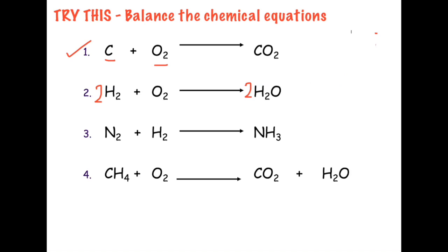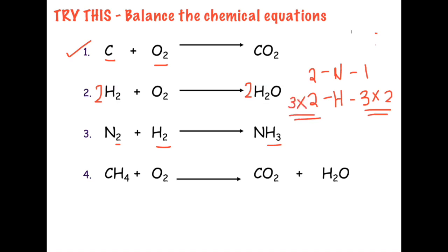Let's proceed to the third example. We have nitrogen: two on the reactant side and one on the product side. Hydrogen has two on the reactant side and three on the product side. To balance hydrogen, we find the least common multiple of two and three, which is six. We multiply the reactant hydrogen by three to make six, and the product hydrogen by two to make six. Multiplying by three also affects N2, making nitrogen balanced on both sides.